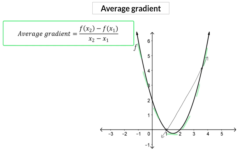In this equation they just use function notation. So instead of writing the numerator as y2 minus y1, we are saying how you determine those two values. f(x2) means that we are going to substitute the second x value into the equation to determine the y value that goes with that.